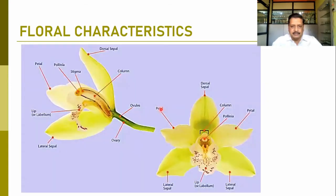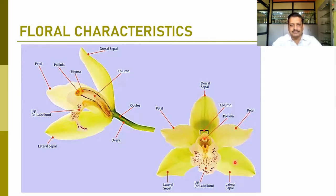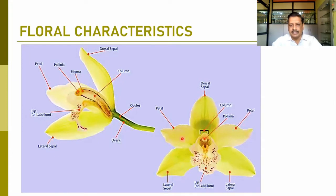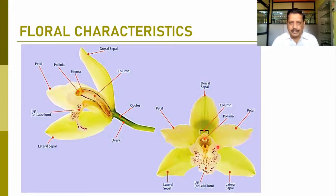This modification takes place because of the twisting of the ovary in the perianth structures. Of all the petals, one is modified into the lip or labellum-like structure — the most attractive part of the flower. These are the lateral sepals; they look like petals but we call them sepals. There are two inner petals and a dorsal sepal. So three are sepals and three inner are petals, but all have colored structures, so we call them tepals.